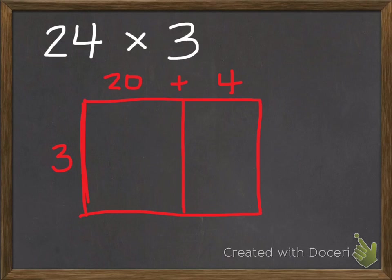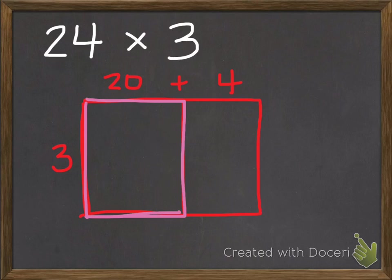So to find the area of the first rectangle, this rectangle here, it's a 20 by 3 rectangle. So 20 times 3. Well, I know how to multiply by multiples of 10.